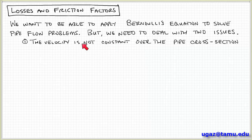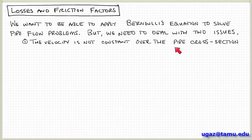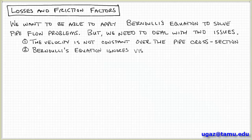One correction involves the fact that the velocity is not constant over the cross-section of the pipe. For laminar flow in a pipe, the velocity profile is a parabolic one — zero near the walls due to the no-slip condition, with a maximum value in the center. So this non-constant velocity becomes an issue when we consider the kinetic energy associated with the flow, one-half mv squared. Another important issue is that Bernoulli's equation ignores viscous losses, which is an important limitation. We need to find some way to account for these losses in the framework of this equation to apply it to pipe flow.